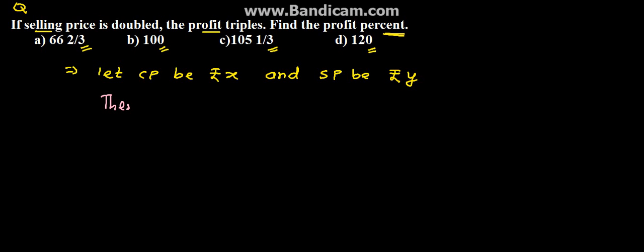From the given problem, we can form that 3(y minus x), that is selling price minus cost price, is equal to (2y minus x). We can form this equation from the question, where y equals 2x.